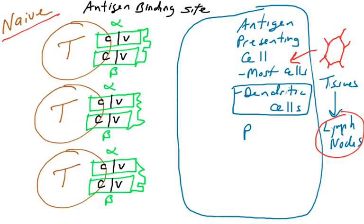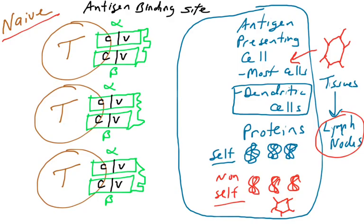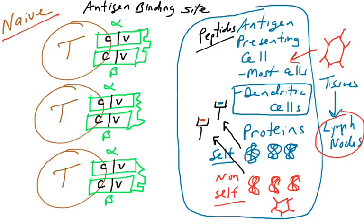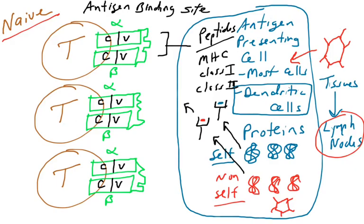Inside cells, you find proteins — self-proteins, and if there's an infection, non-self-proteins, such as viral proteins. T cells look at these proteins found inside cells. These proteins are processed into small chains of amino acids called peptides — anywhere from 8 to 25 amino acids long. Both self and non-self proteins are chopped up into little pieces and loaded onto receptors that travel to the cell surface. These receptors are called MHC class 1 and MHC class 2. T cells are really looking at these peptides presented by MHC molecules.